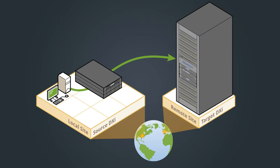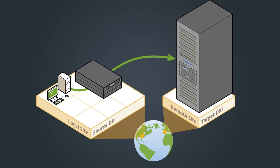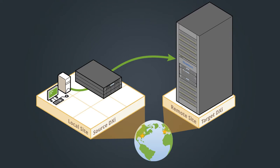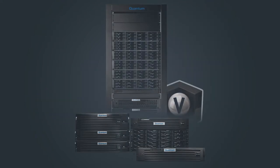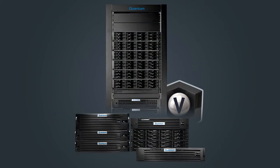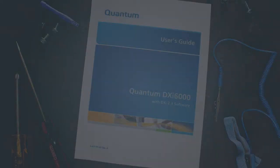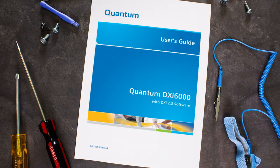In this demonstration, I'm going to configure a DXi 6800 as the source DXi system and a DXi 8500 as the target DXi system. Note that the configuration process is the same for all DXi series systems with 2.3 software. For additional information or step-by-step procedures on configuring replication, always refer to the user's guide for your DXi system. For an overview of the DXi replication feature, including the different types of replication, watch the DXi series replication overview video.